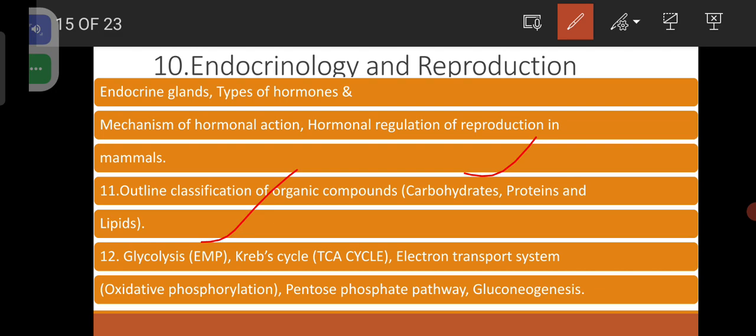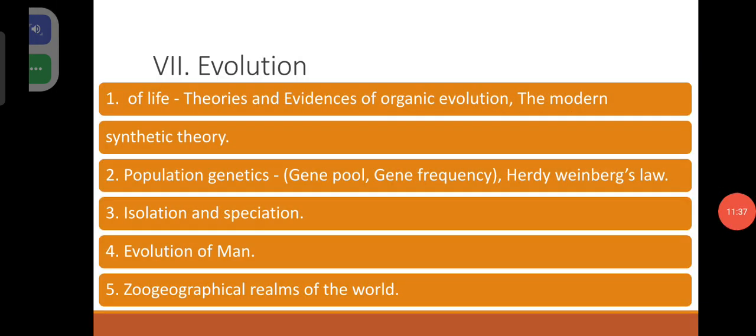Krebs cycle. Electron transport system. Oxidative phosphorylation. Pentose-phosphate pathway. Gluconeogenesis.